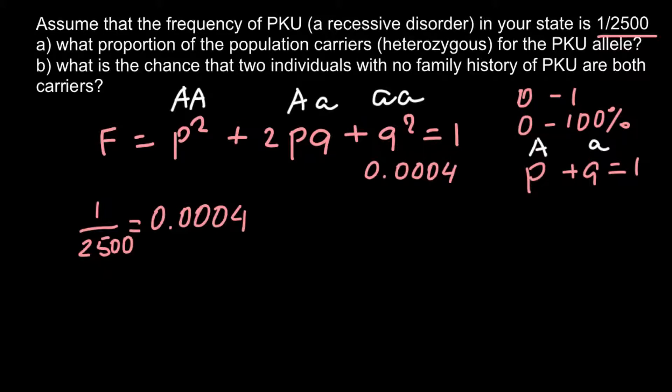And now in order to find the number of people who are heterozygous, we need to know Q and P. Right now we know q². So how to find Q? We just have to take the square root from q², or from this number. So Q would equal to the square root of 0.0004. So this is going to be 0.02.